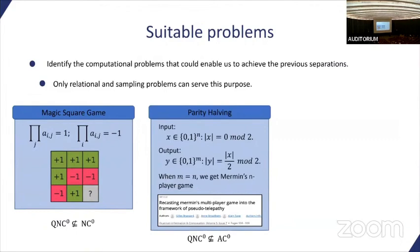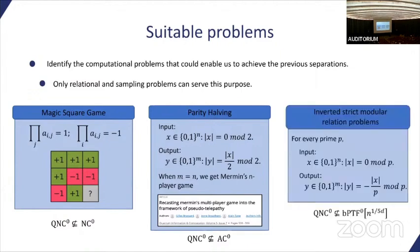The separation with AC0 used a parity halving problem, where we are given an even input string and we have to output the string which is modular two congruent with the Hamming weight of the input string divided by two. When the output string is of the same size as the input string, this is actually related to the generalized Mermin game. What we did here is generalized the previous set of problems to arbitrary primes. We call them the inverted strict relation problems, where we get an input string which is modular p congruent with zero, and the output string has to be modular p congruent with x minus x divided by p.